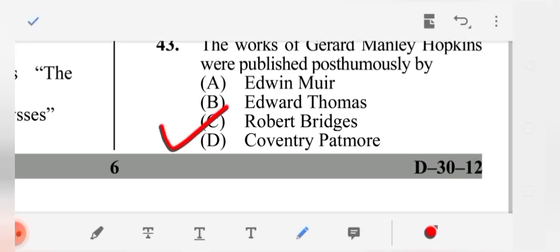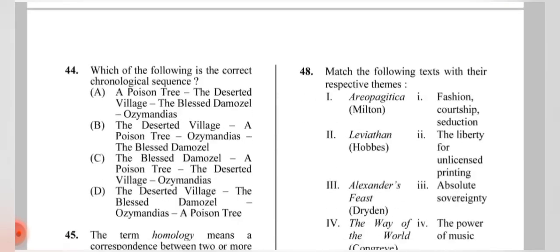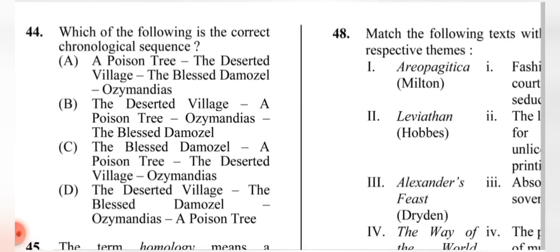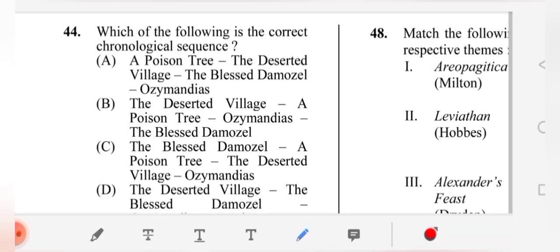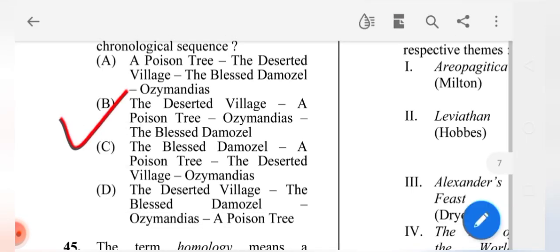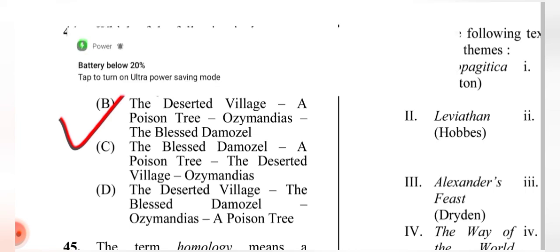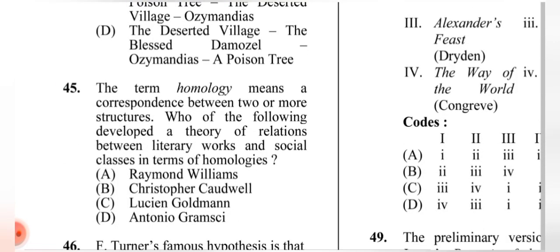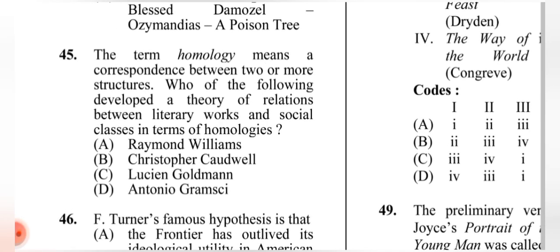Question 43: The works of Gerard Manley Hopkins were published posthumously by whom? The correct answer is (C) Robert Bridges. Question 44: Which of the following is the correct chronological sequence? The correct answer is (B): 'The Deserted Village,' 'A Poison Tree,' 'Ozymandias,' 'The Blessed Damozel.'